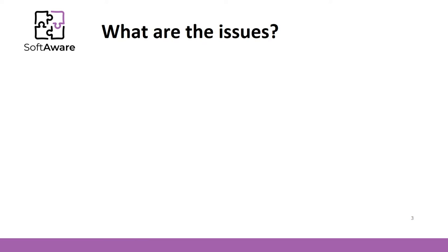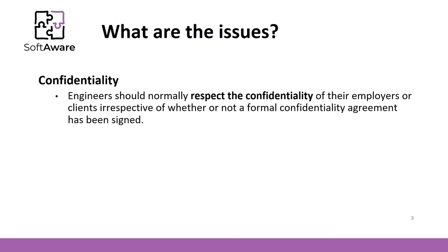Professional responsibility has several important parts that are common in software engineering. The first one is confidentiality. Often, software engineers have access to sensitive and confidential data. Every professional engineer should always respect confidentiality, even if a formal confidential agreement is not signed. You cannot add, change, or delete the data, or share it with other people or companies.